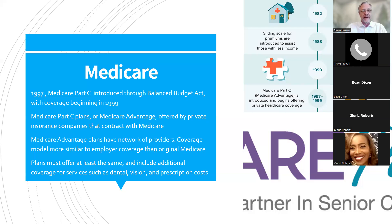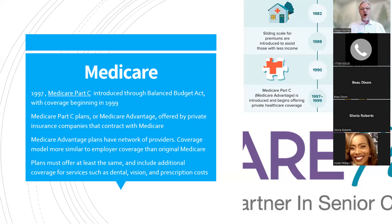Medicare Advantage plans are provided by private insurance that contracts with Medicare. They have a network of providers — more like the employer coverage model where there are certain specialists or providers you're approved to see. These plans must offer at least the same coverage as original Medicare, and they all offer additional coverage such as dental, vision, prescription drugs, and a host of other things.